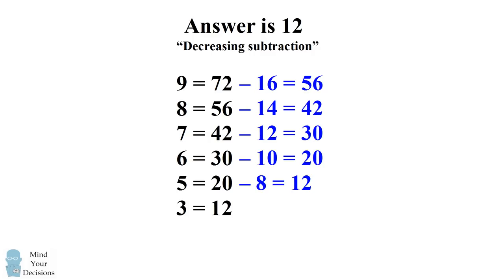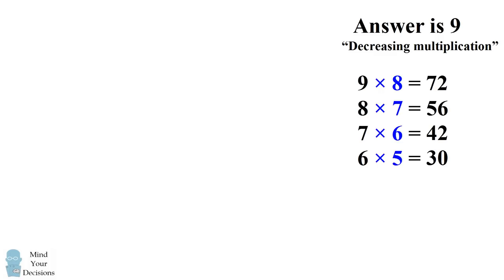But hold on. There's a third group of people who say the answer is neither 6 nor 12 but actually that the answer is 9. Their method is looking at a pattern of decreasing multiplication. So the difference in this method is now they say look at the numbers you're multiplying by.